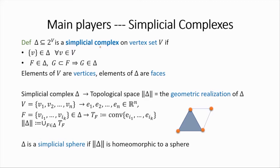Delta is a simplicial complex on V if it's a collection of subsets of V satisfying some properties. The main one is that this collection should be closed under inclusion. So if something is in delta, say F, and G is a subset of F, then G also must be in delta. I will also usually assume that every one-element subset is an element of delta. The elements of delta are called faces, singletons are called vertices, and doubletons we will start calling edges.